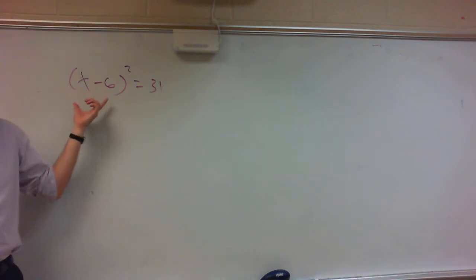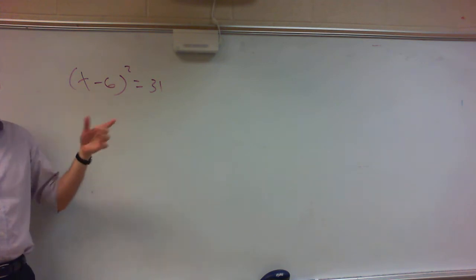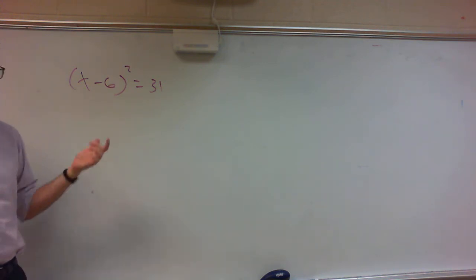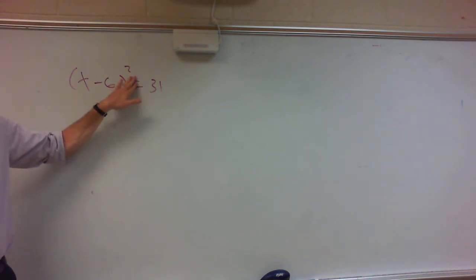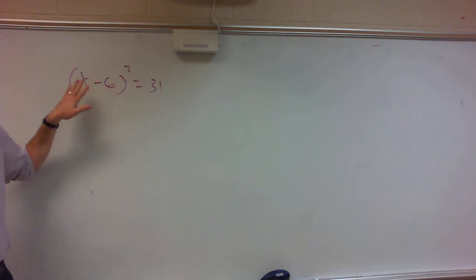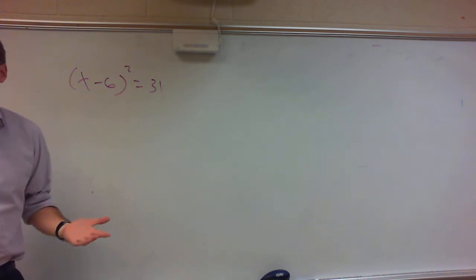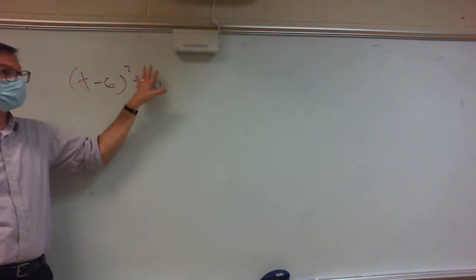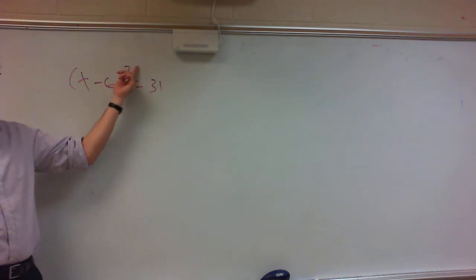What are we going to do to get x by itself? I've got two things with it: a minus 6 and a square. If I want to get x by itself, the thing that's furthest away from the x is what I want to get rid of first. So I'll take the square root and get rid of the square.